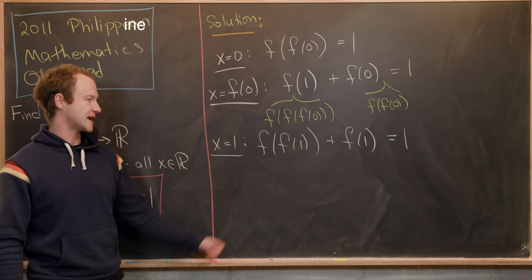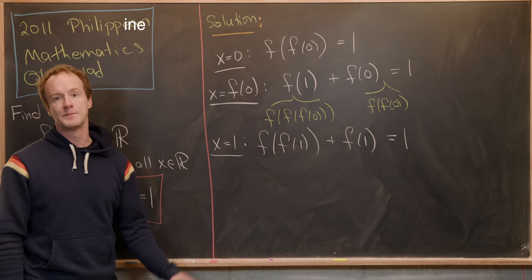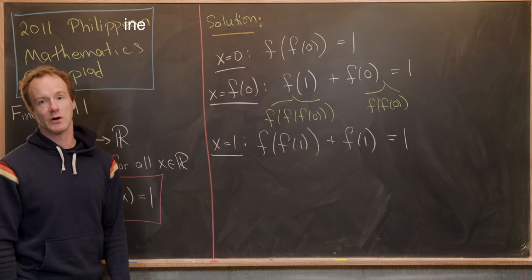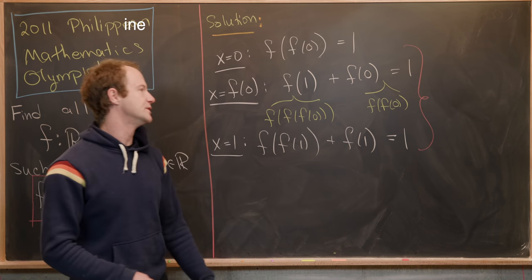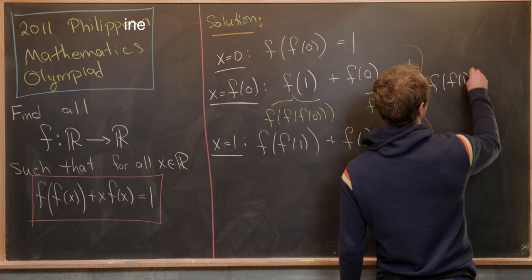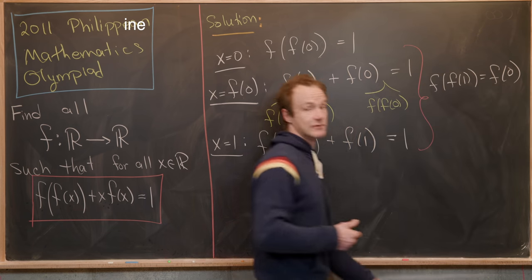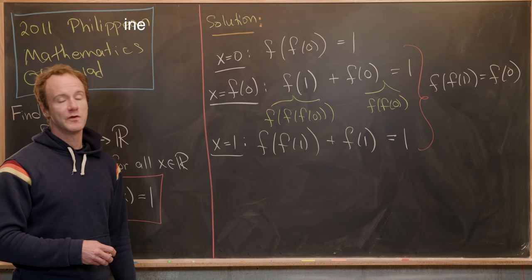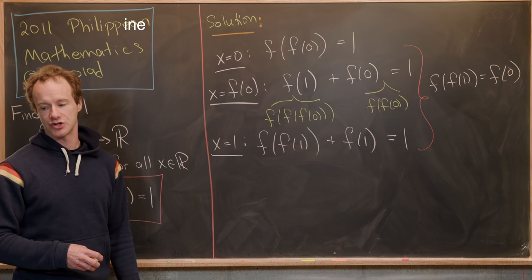But notice this gives us a nice system of equations where we can think about our three variables as being f(f(1)), f(1), and f(0). But now by subtracting these two equations, it's pretty easy to see that f evaluated at f(1) is equal to f evaluated at 0. And that also gives us some motivation for what our next substitution should be. Perhaps it should be x equals f evaluated at 1.